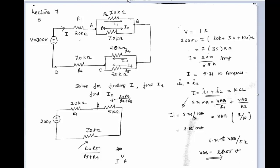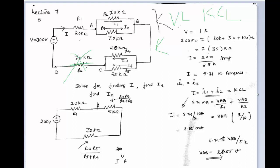Continuing the lecture, we will solve a problem by applying KVL, KCL, or the series and parallel equations we have seen so far. There is a mistake in the problem — the 10 kilo ohm resistor needs to be removed since it was missed while solving. You will just connect it with a short circuit or wire to cancel it out.